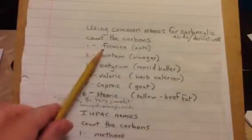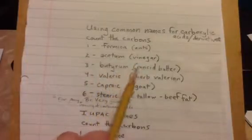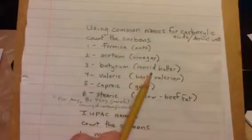So one carbon formica, Latin for ants, acetum comes from acetic acid which is found in vinegar. Three is butyrum which it was something they discovered in rants of butter. Valeric is coming from the herb valerian. Coproic is the Latin word for goat. And steric comes from the Latin word for tallow which is beef fat.